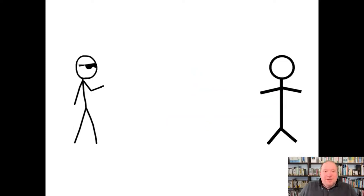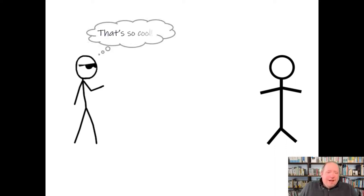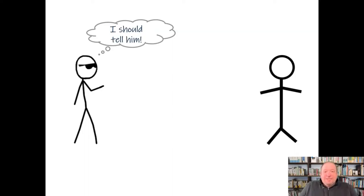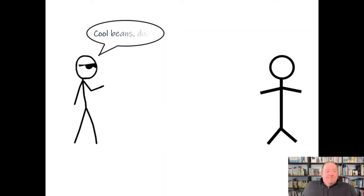So we start off with this cool guy, right? He's just hanging out. He sees that his buddy over here is doing something equally cool, and he thinks to himself, 'Wow, that's so cool. I should tell him about how cool that is.' So he does — he lets him know that what he's doing is cool. And so there we have the beginning of the communication process.